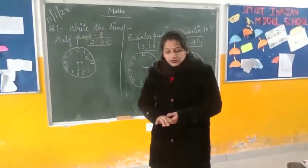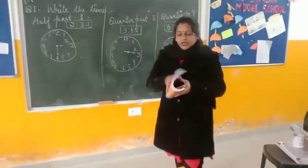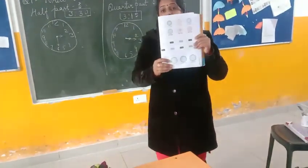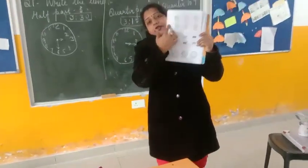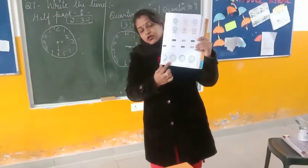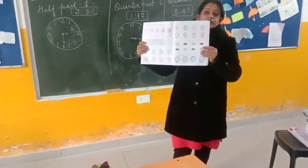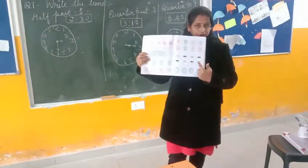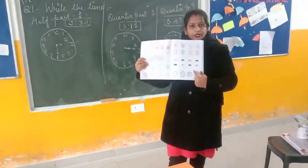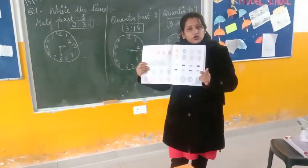Now you will complete the task which I have given to you in your book. Take out page number 121 — the clock page. Here many clocks are seen in your book with two different timings. You will make the clock on your copy and draw the hands very carefully. Long hand shows minute and short hand shows hour.